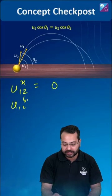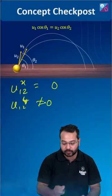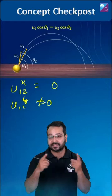Now u12 in the y direction is not going to be equal to 0 because the vertical velocities are going to be different.